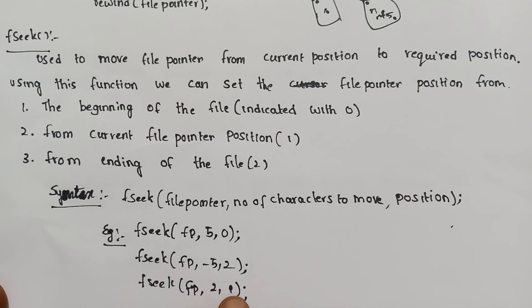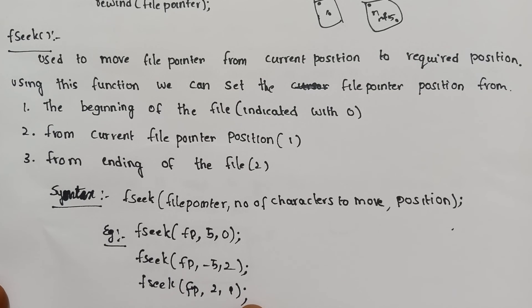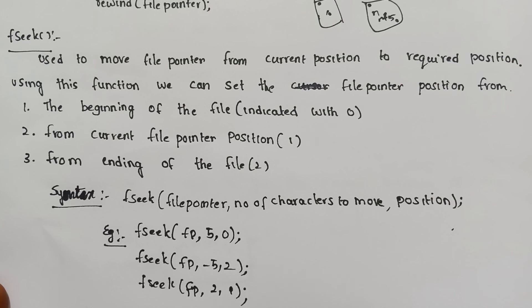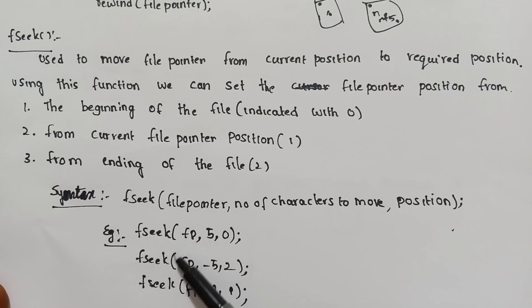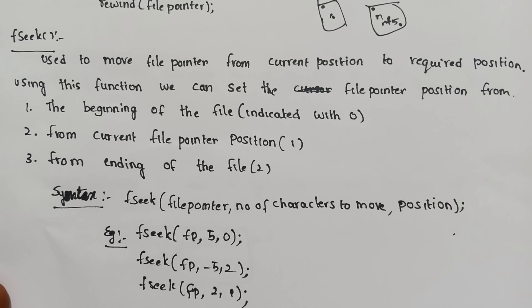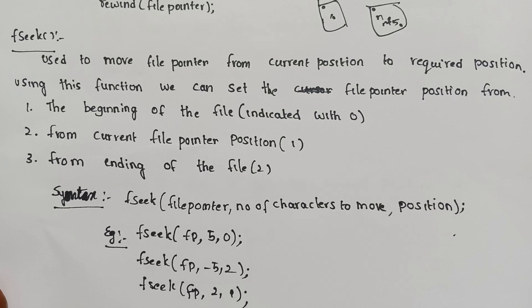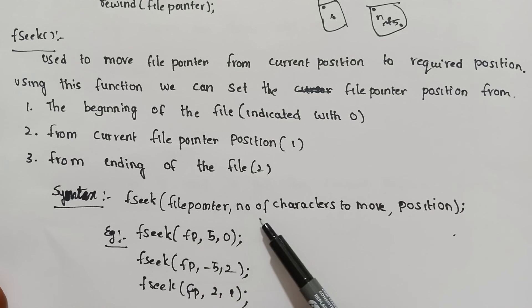Next, fseek(fp, 2, 1) — from the current cursor position, move 2 characters forward. A positive number means forward direction, and a minus means backward direction. So using fseek, you can set the file pointer to any required position. This covers the definition, syntax, and examples for fseek.